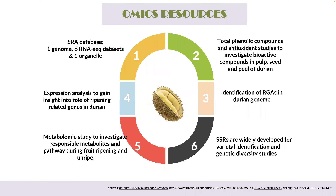For the omics resources, our previous studies have investigated total phenolic compounds and antioxidants to study bioactive compounds in the pulp, seed, and peel of durian. Since the durian genome was established, researchers are interested in identifying resistant gene analogues in the durian genome. Due to recent advances in RNA-seq technology, researchers have studied expression analysis to gain insight into ripening-related genes. Metabolomic platforms have also been used to investigate responsible metabolites and pathways during fruit ripening. Several datasets are available in the Sequence Read Archive database, including genome, RNA-seq, and organelle genome data.